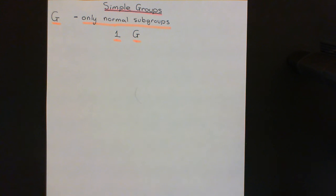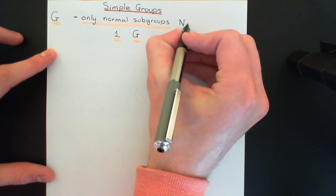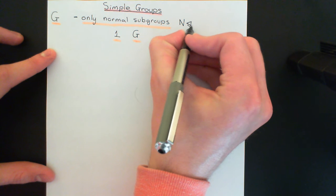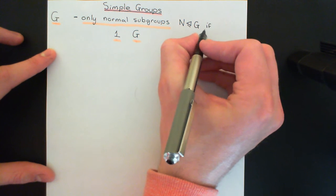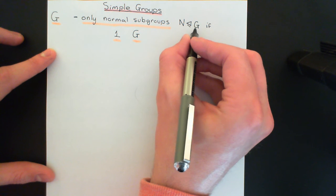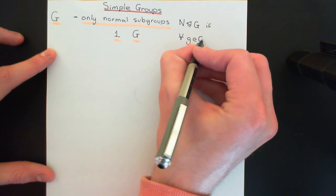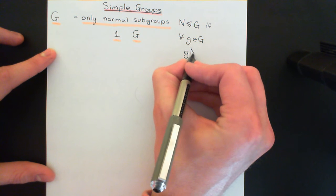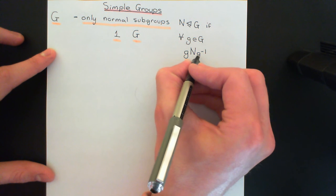Let me remind you what it means to be a normal subgroup. A normal subgroup is a special type of subgroup. We usually refer to normal subgroups by the letter N. N will be a normal subgroup of G if it's a subgroup firstly, and it also obeys the criterion that it is stable under conjugation by any element of the group. For all g in G, if you conjugate the normal subgroup by g — going through every single element of this normal subgroup and conjugating every last one by g —